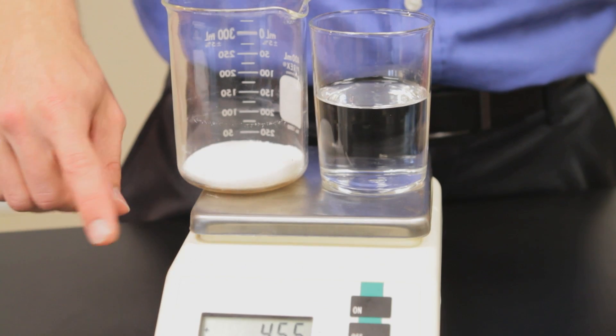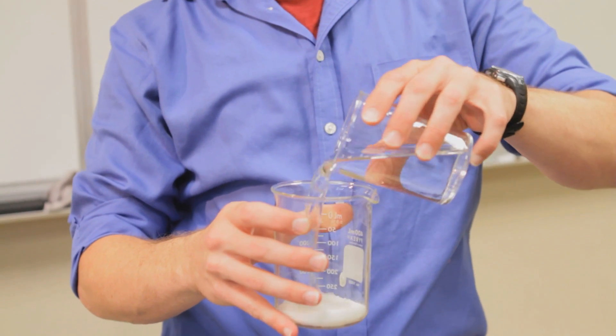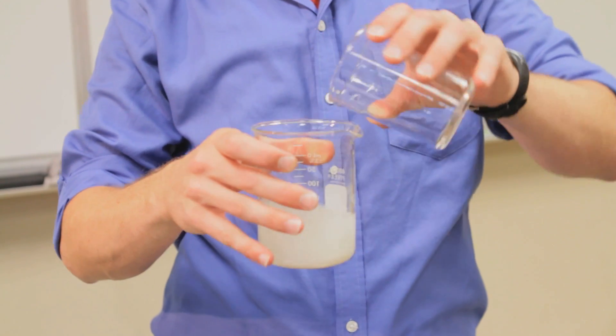Consider sugar and water unmixed. Originally, the mass is 455 grams, but when we mix them together, the new mass is 455 grams.